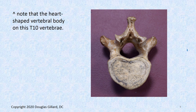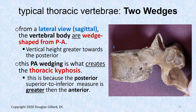Here's a vertebra — this is T10. That's pretty heart-shaped looking. You can see the pedicles here quite nicely, and the transverse processes. Notice the transverse processes come off the pedicles in a kind of weird way — they're swept back. That's another way you can tell this is a thoracic vertebra.